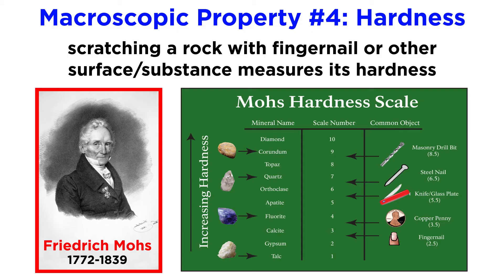Austrian mineralogist Friedrich Mohs determined this literal rule of thumb while developing the Mohs hardness scale. The Mohs scale ranks minerals by their ability to scratch each other, and is used to measure the relative hardness of a mineral sample. The scale goes from 1, the softest mineral, talc, to 10, the hardest mineral, diamond.